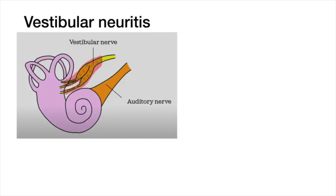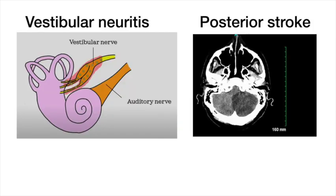So that certainly fits the definition of the acute vestibular syndrome. Now the question is, does she have vestibular neuritis, which is more likely, or is she having a posterior circulation stroke, which is less likely?